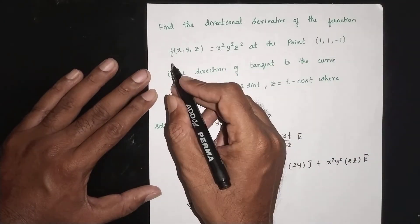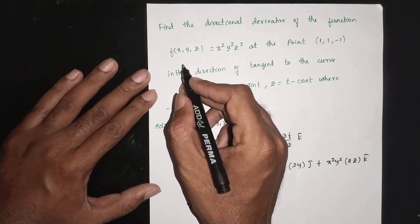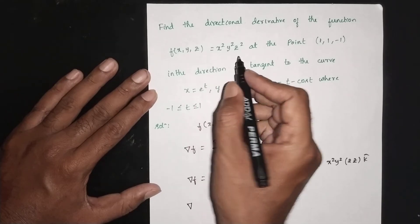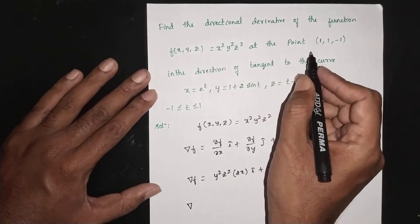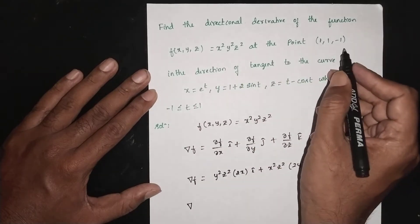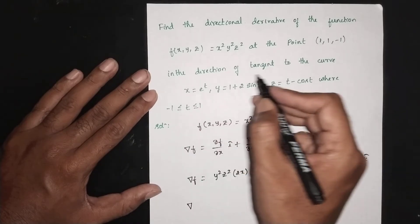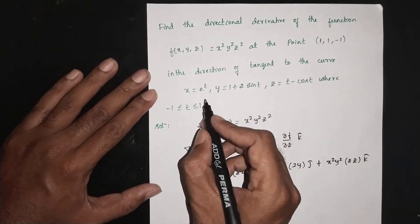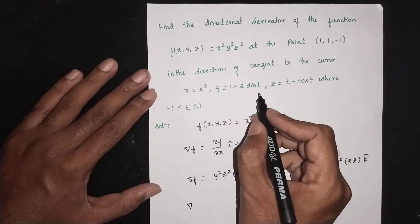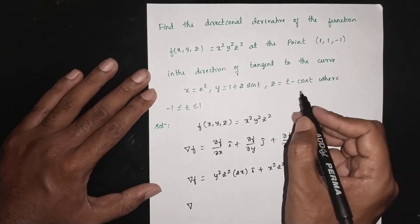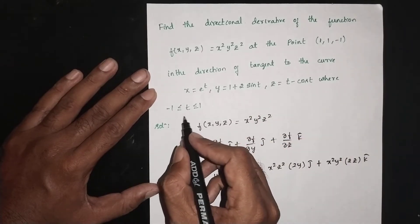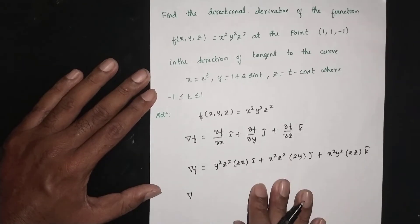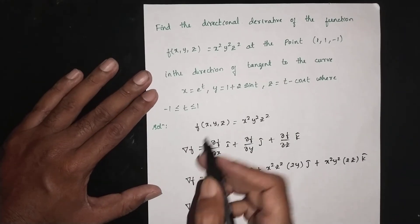Find the directional derivative of the function f(x, y, z) = x²y²z² at the point (1, 1, -1), in the direction of the tangent to the curve x = e^(4t), y = 1 + 2sin(t), z = t - cos(t), where t is between -1 and 2.